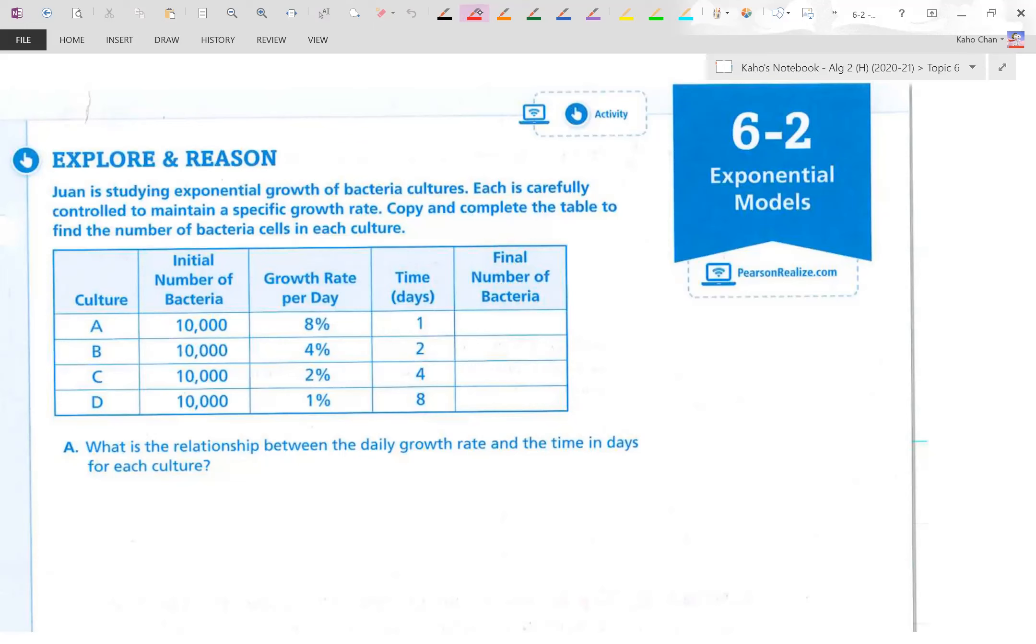We have four cultures here, A, B, C, and D, as you can see in each row. Each of those cultures start with 10,000 bacteria. But each culture has a different growth rate. A is 8 percent, B is 4 percent, C is 2 percent, and D is 1 percent. They are allowed to grow a certain number of days. Find the number of bacteria after those many days.